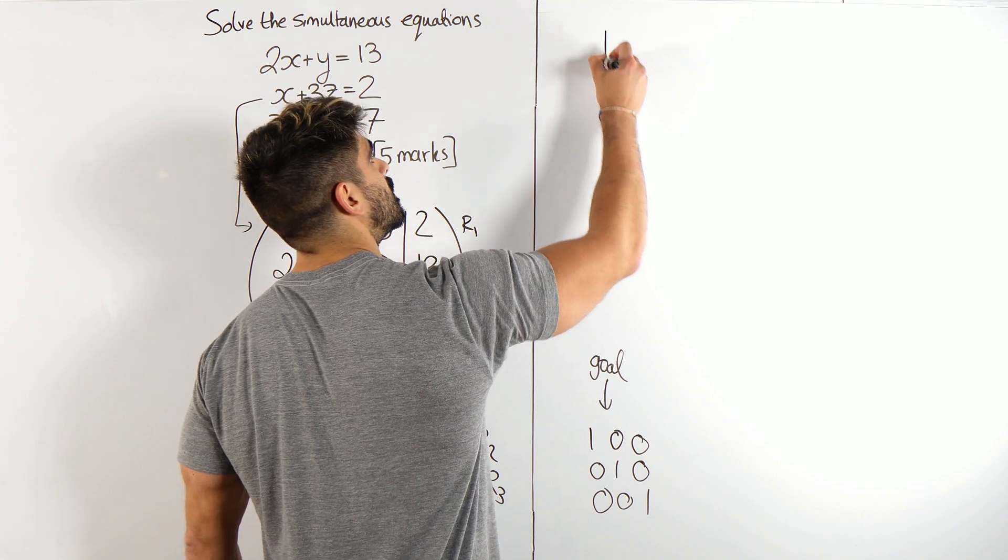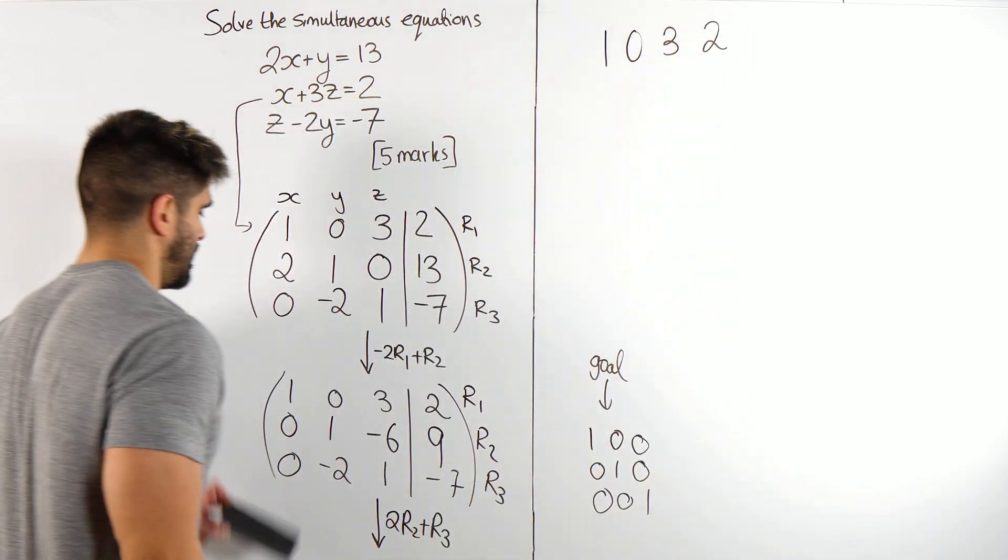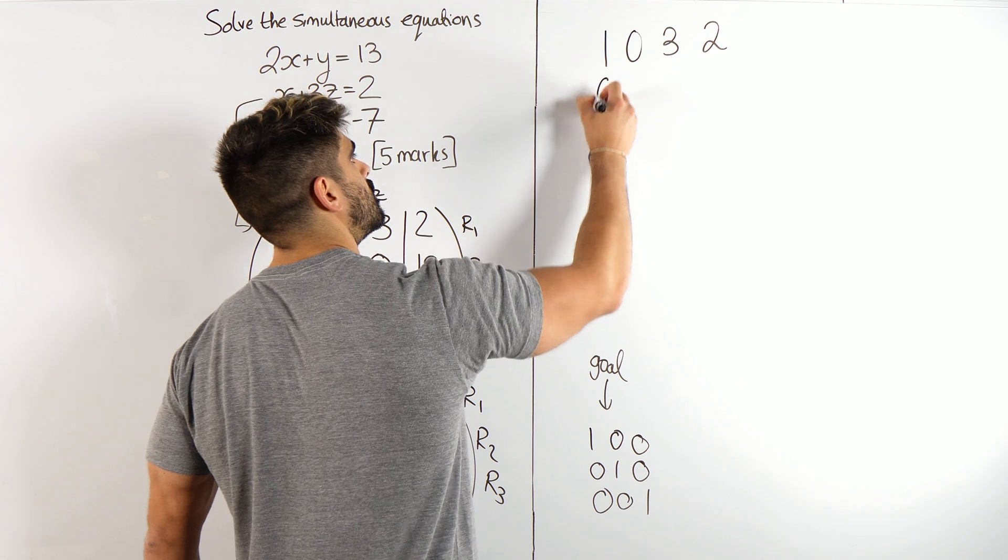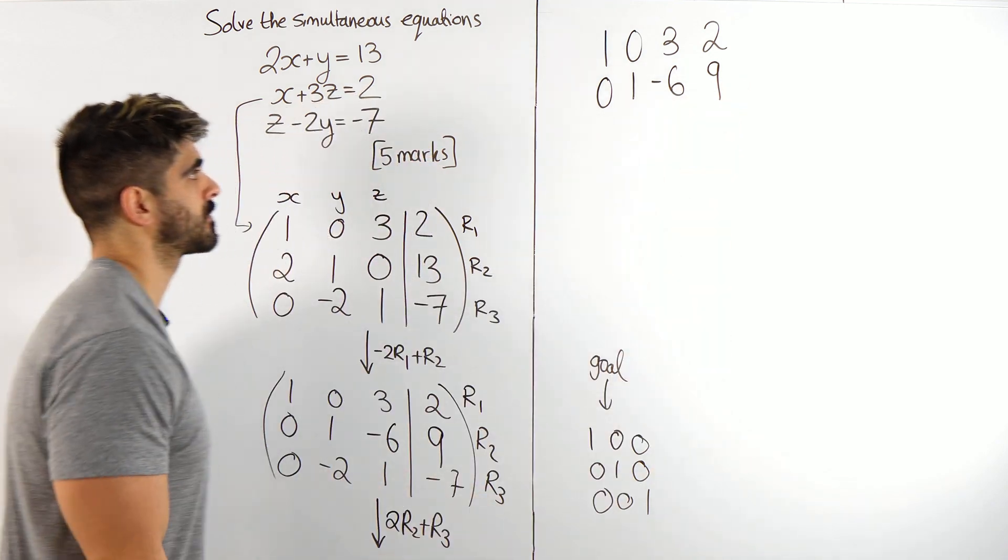So I have 1, 0, 3, 2. And here, 0, 1, minus 6, 9. 0, 1, minus 6, 9.